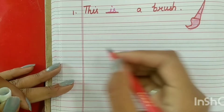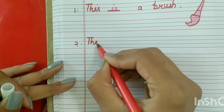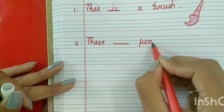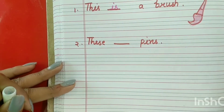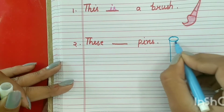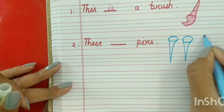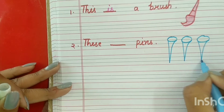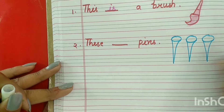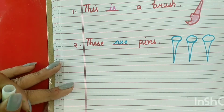Now make point number two and write: 'these' — T-H-E-S-E — dash pins. Pins. So now we will draw pins like this — 1, 2, 3. So these are the pins. What will come here? These are pins, because there are more than one thing. So 'these are pins' will come here, and color also.